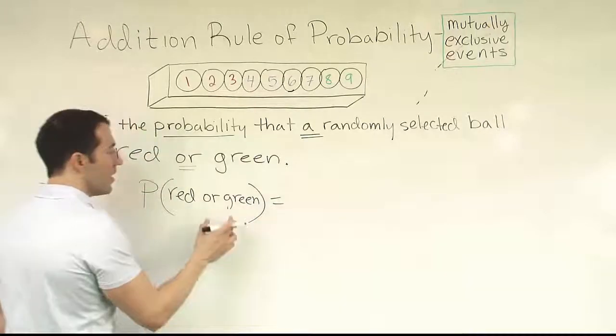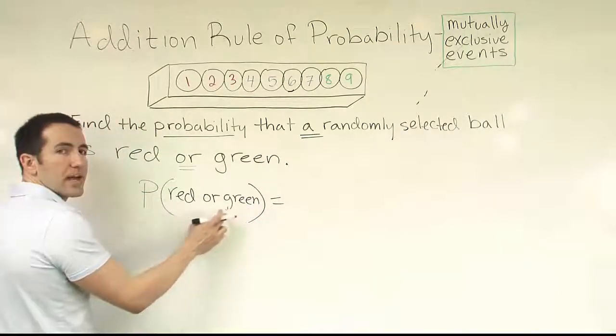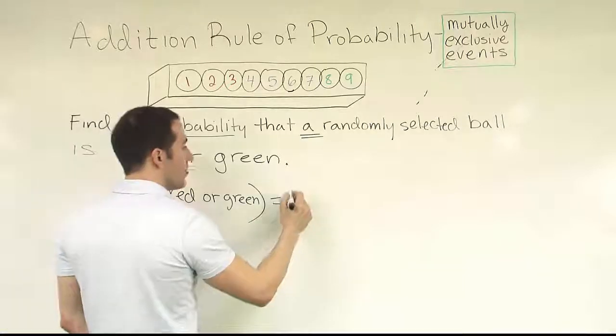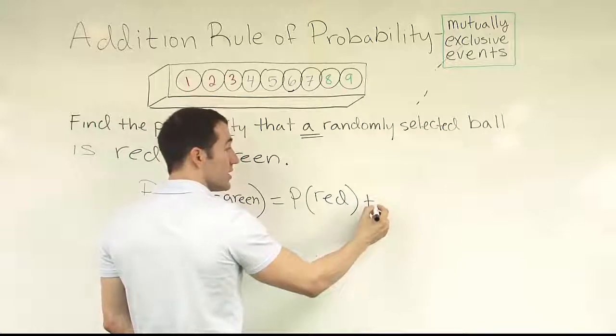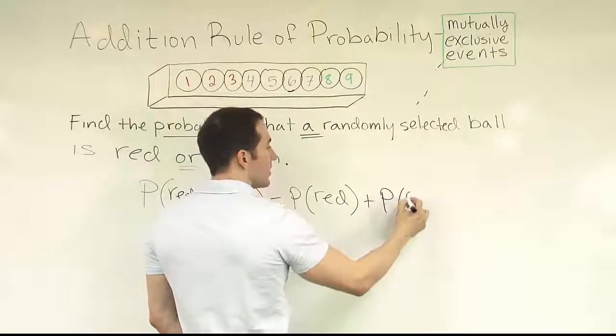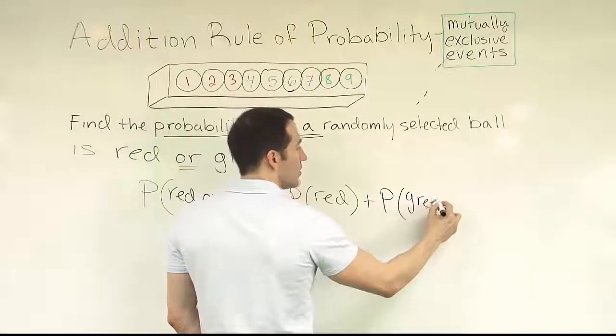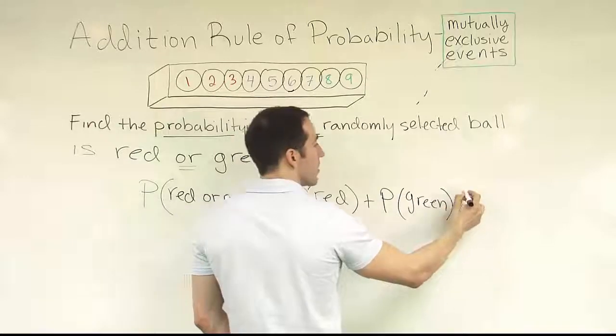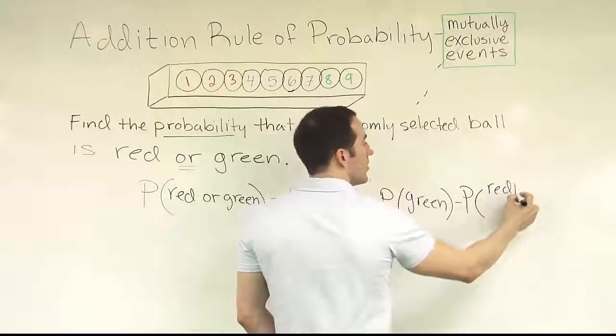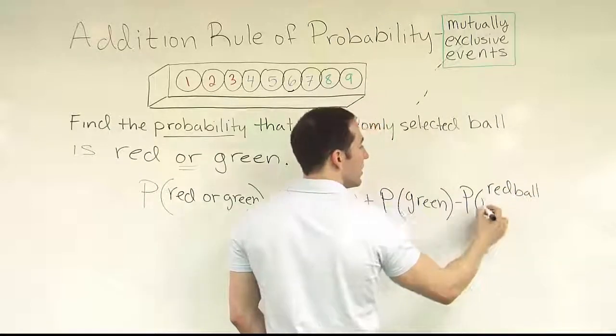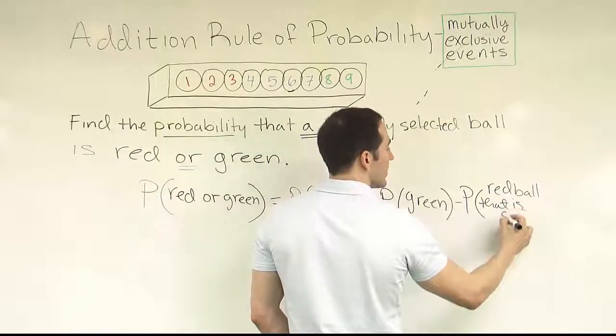So I'll have the probability that I get a red ball from the group plus the probability that I get a green ball from the group minus the probability that I have a red ball that is green.